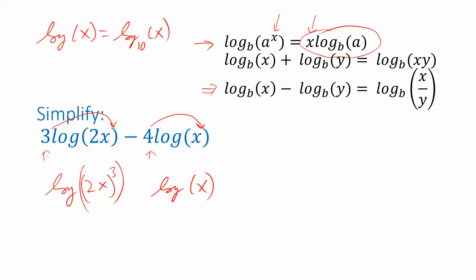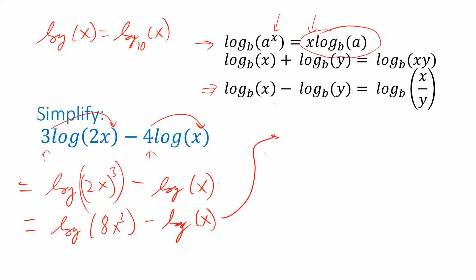So I've rewritten each of the two terms in this difference. Now I can simplify the expression inside the first logarithm: (2x) cubed is 2 cubed times x cubed, which is 8x cubed. Now I'm ready to use the bottom property — changing the difference into a single logarithm of the quotient: 8x cubed divided by x. One more step gives us log of 8x squared.